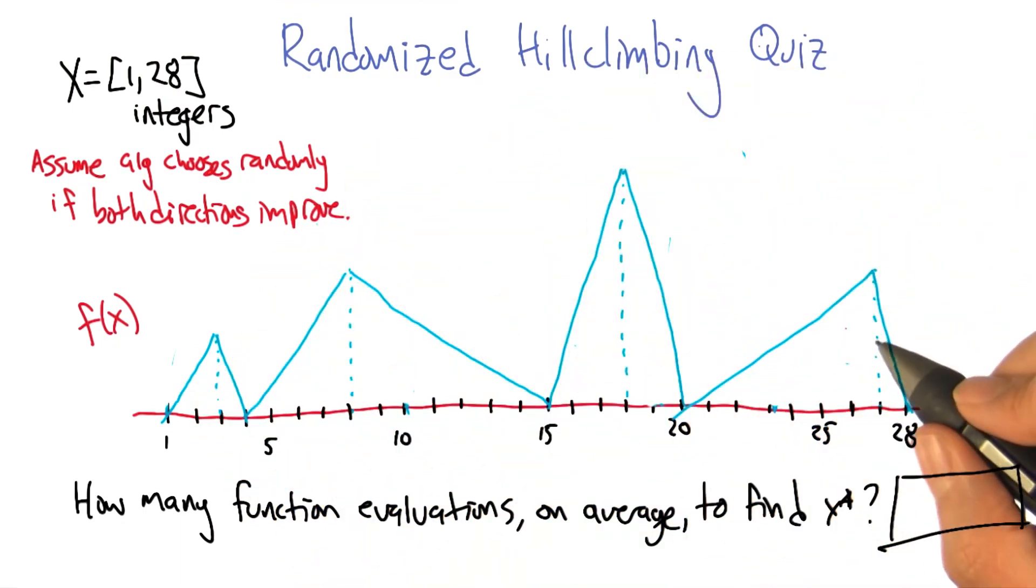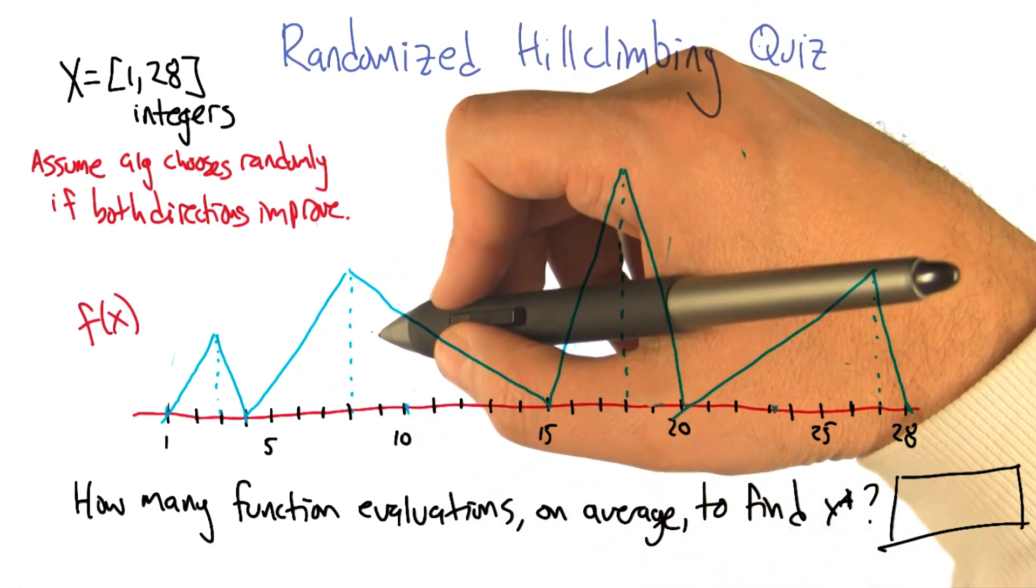For each of those points, it follows this not exactly sawtooth, kind of piecewise, jaggy function. I don't know what to call it. Drunk. It is what it is.